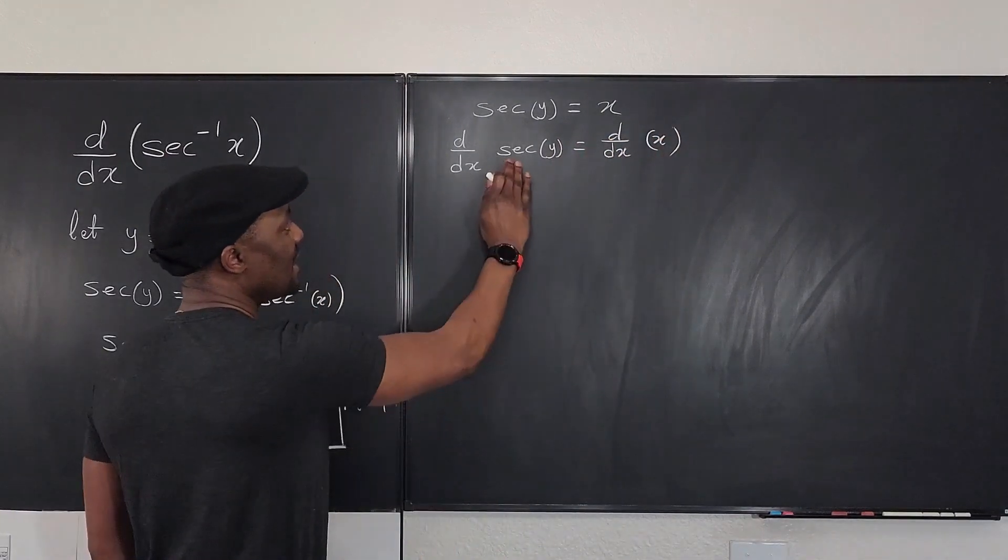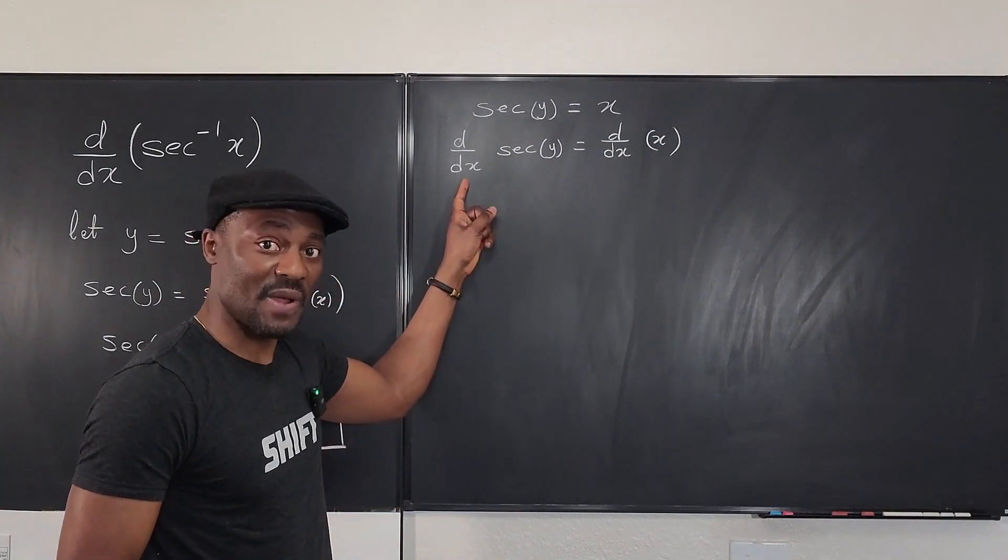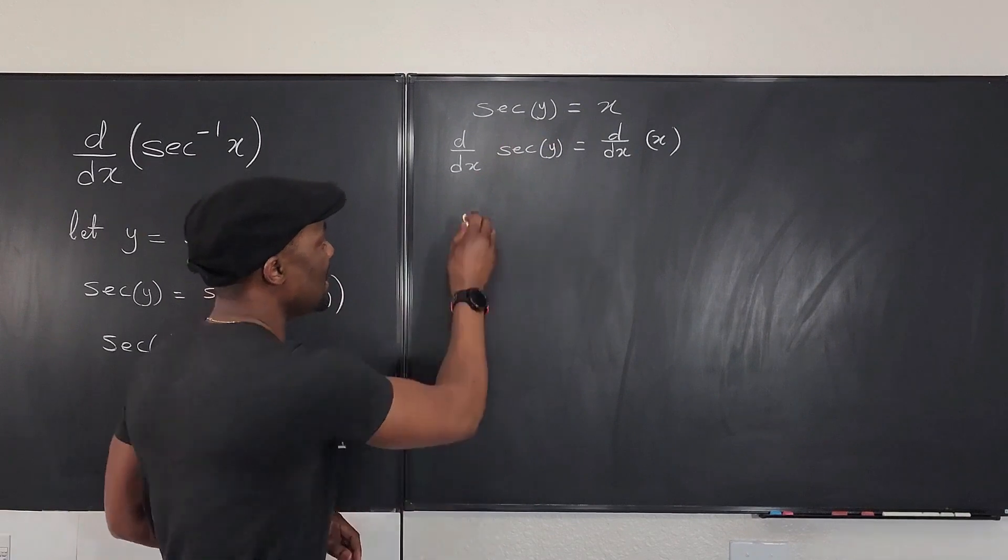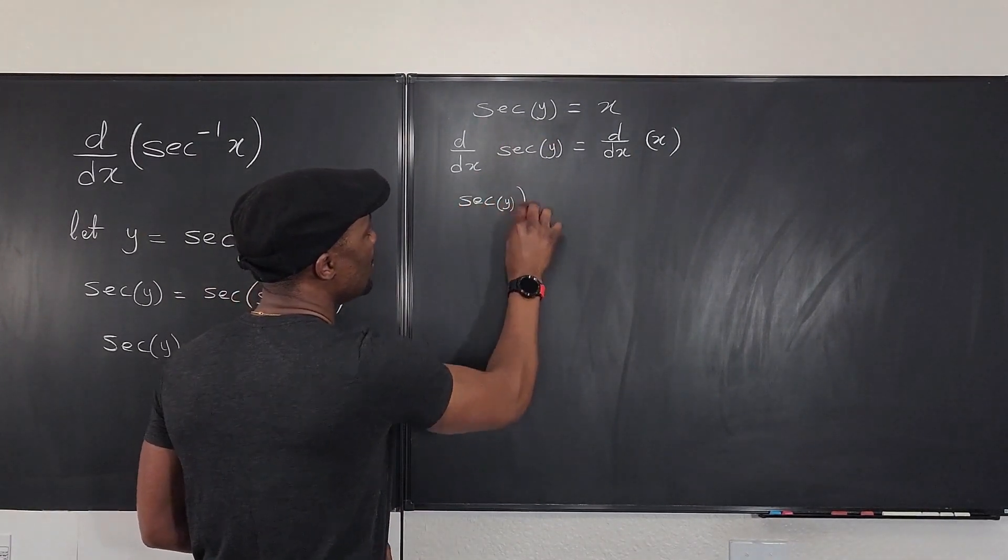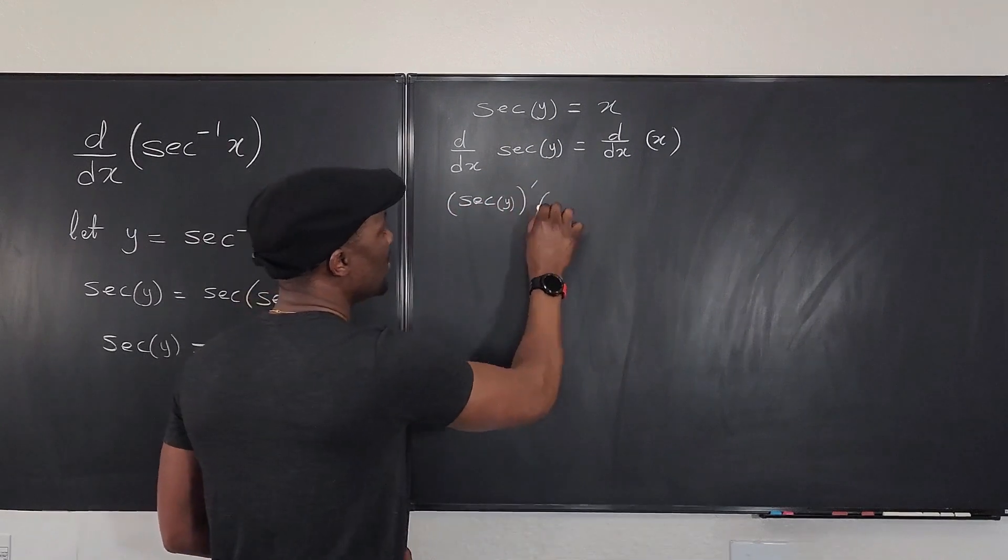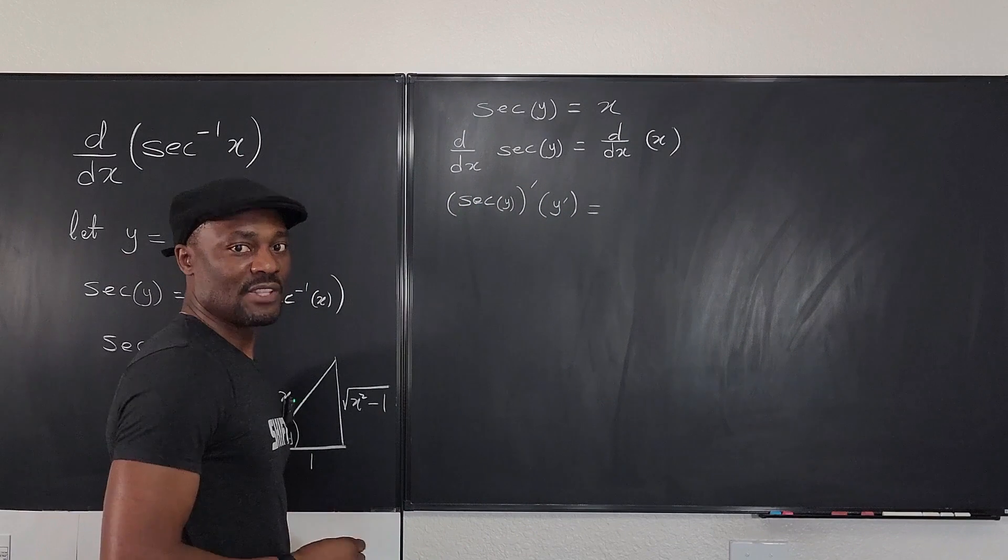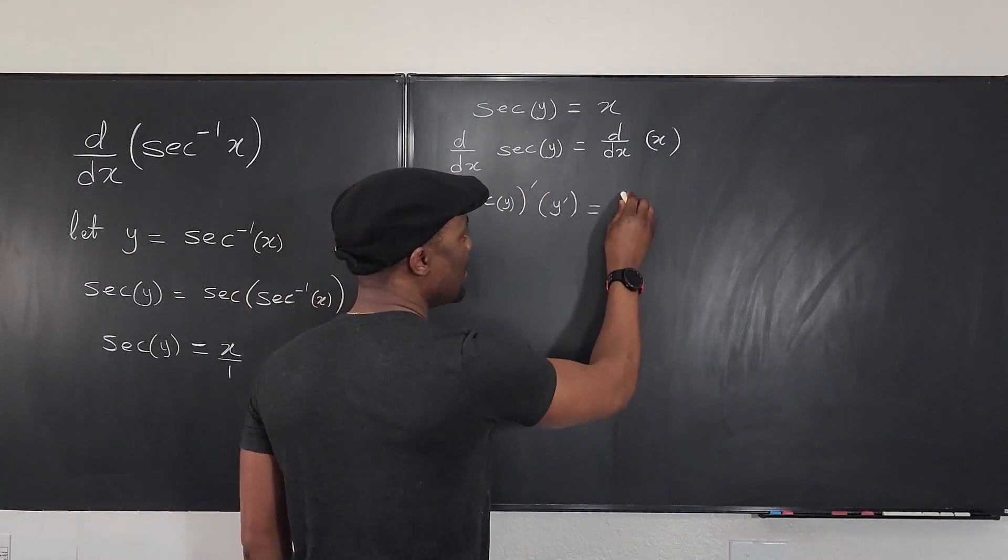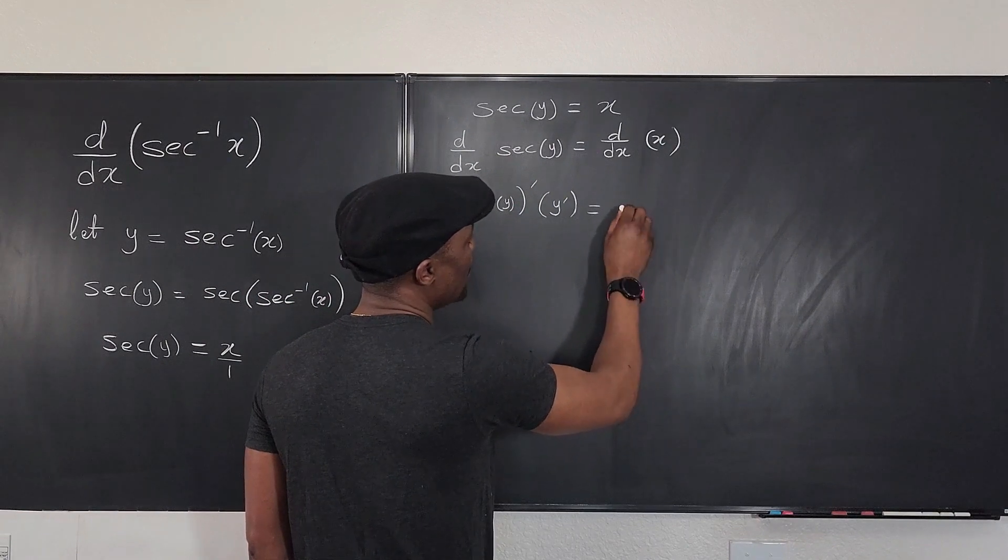So if I take the derivative of this, it's going to be implicit because I'm differentiating with respect to x. First I differentiate the outside—the answer is going to be the secant of y—you take the derivative first, then you multiply by the derivative of the argument. That's the chain rule I just applied. And here I'm going to take the derivative of this, which is just x prime, which is one.